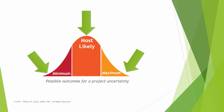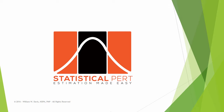That's what Statistical PERT lets you do. Statistical PERT lets you choose any planning estimate between the minimum and maximum possible outcomes. And with each choice you make, Statistical PERT tells you what the likelihood your planning estimate will succeed or fail. Statistical PERT, also called SPERT, creates a statistical model for you using the built-in functions of Microsoft Excel.